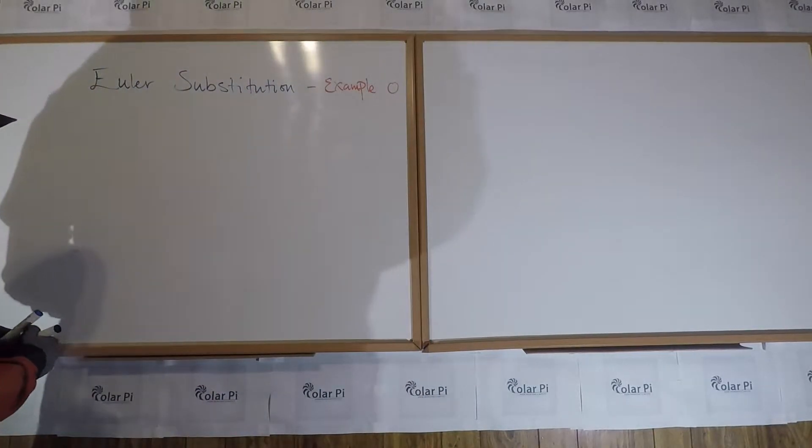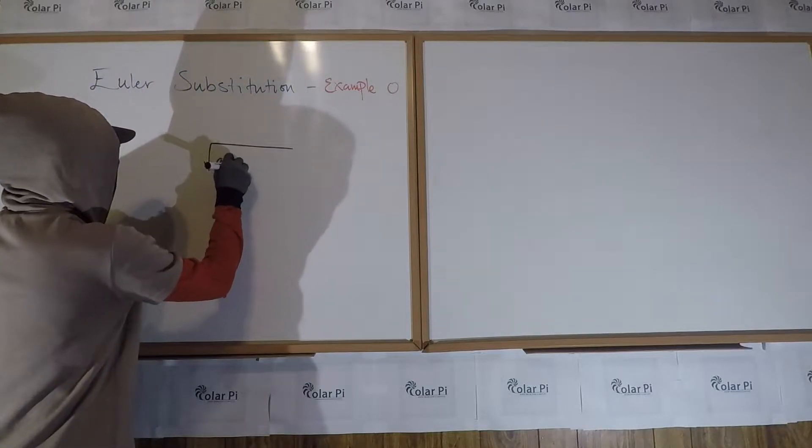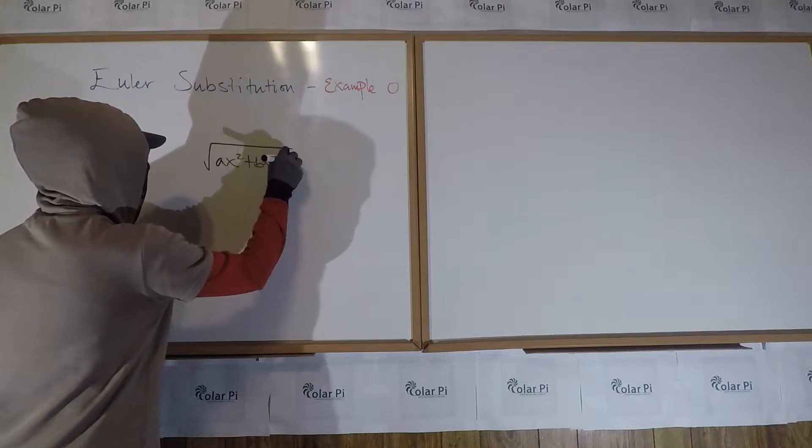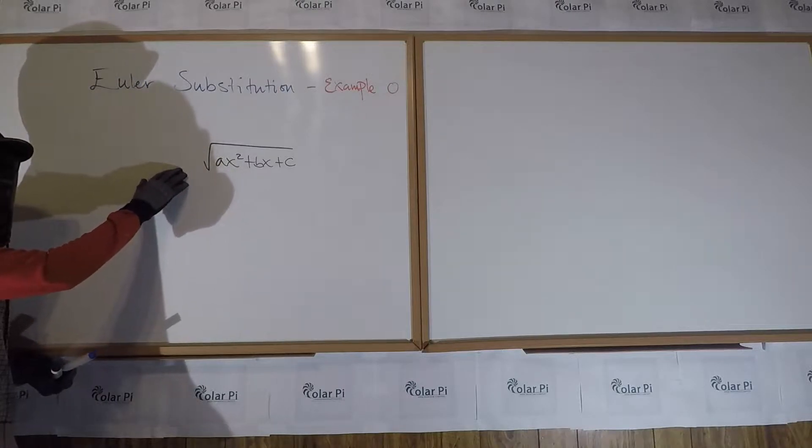Now, if you have an integral that involves the square root of ax squared plus bx plus c, then there are three different Euler substitutions that you can make that allow you to get rid of the square root.